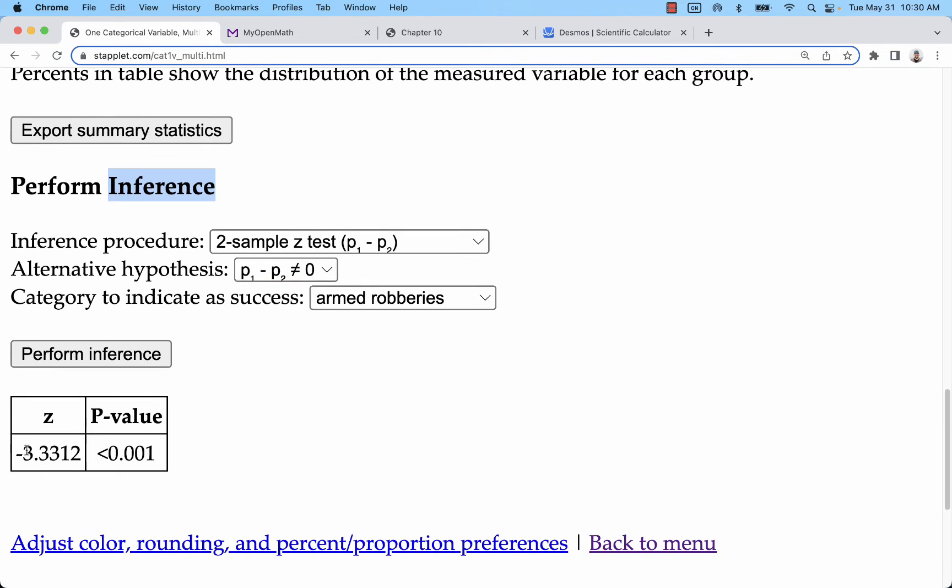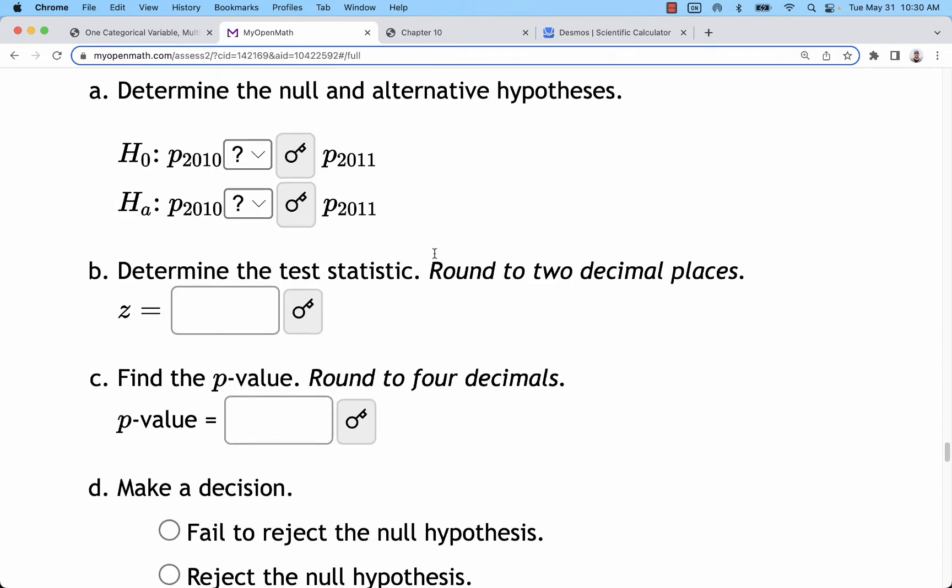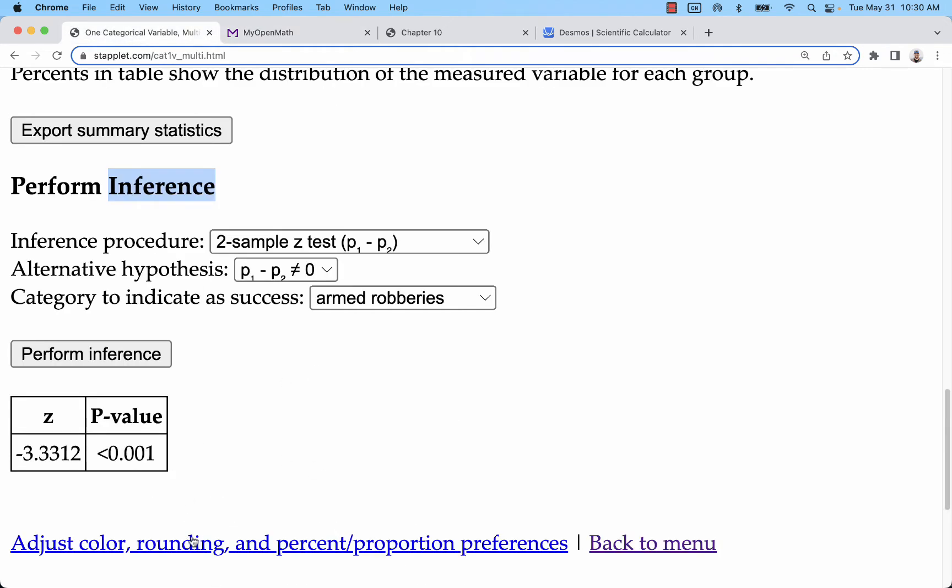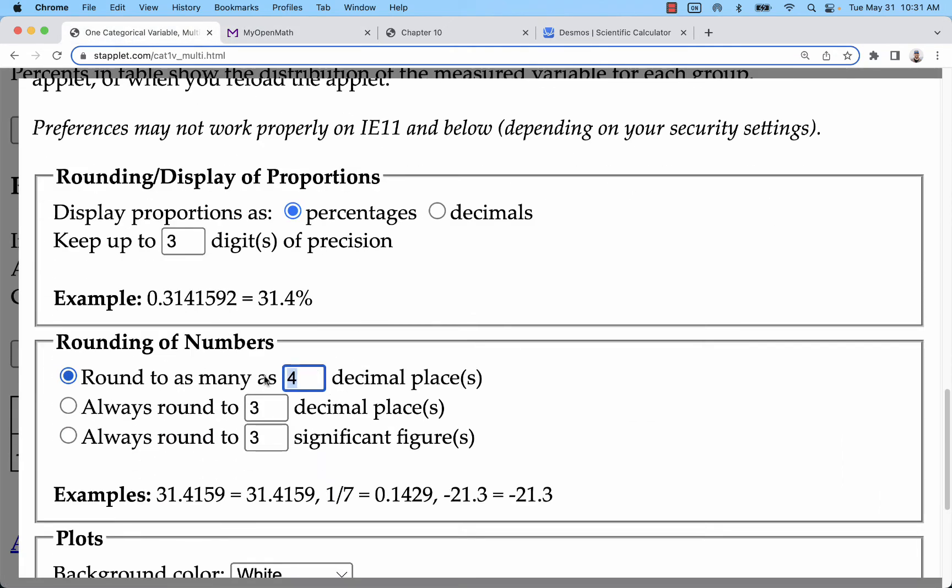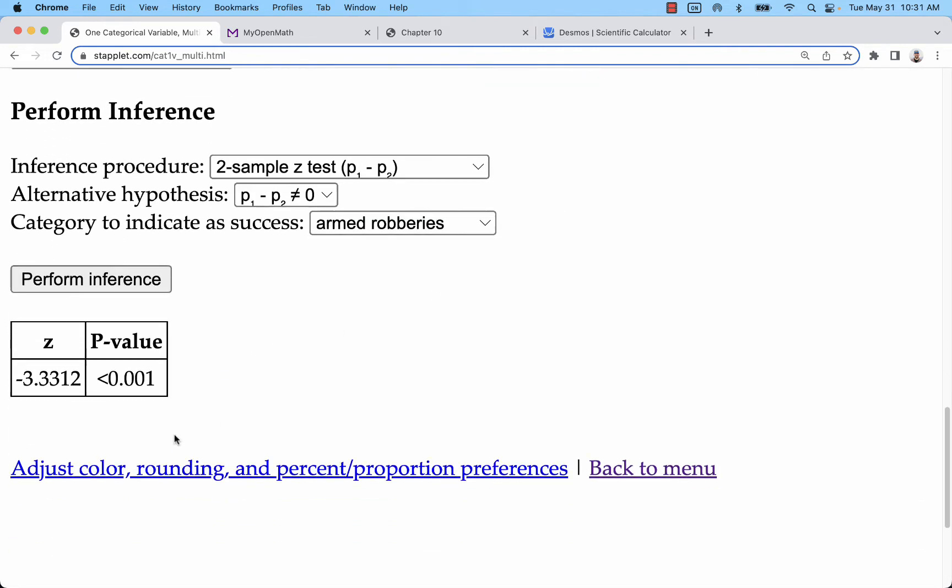Here we have a Z of negative 3.33, so that's 3 1/3 standard deviations to the left. That means population 1 is significantly below population 2, and a very small p-value. Zooming down here, we've got our Z and our p-value. I have had some issues with this p-value. If you need to add decimal places, you can.